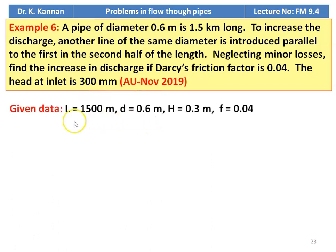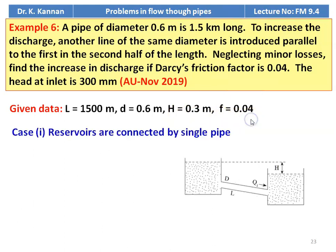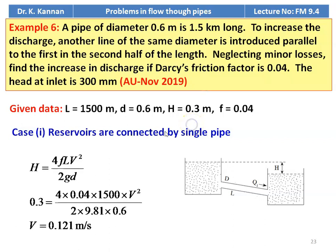The data given: length of the pipe equal to 1.5 kilometer, which is 1500 meter; diameter equal to 0.6 meter; head equal to 0.3 meter; and friction factor is 0.04. When the reservoirs are connected by a single pipe with a head difference of 0.3 meter, we calculate head loss: H = 4FLV²/2GD = 0.3. Substituting: 4 × 0.04 × 1500 × V² divided by 2 × 9.81 × 0.6 = 0.3.